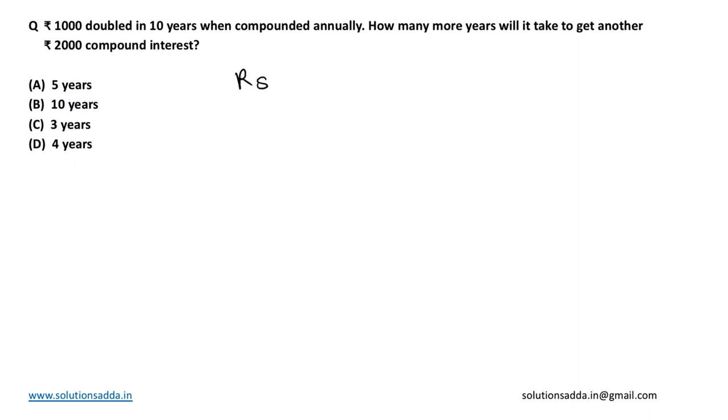We see that rupees 1000 is getting doubled, i.e., becoming 2000 in 10 years, so it is doubling every 10 years. So if we want another 2000 rupees as interest, it will take another 10 years.